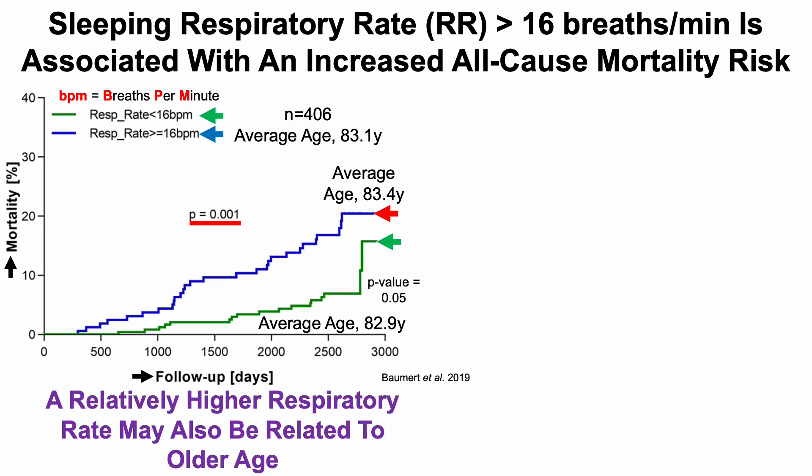Comparing the ages — 83.4 versus 82.9 — and looking at the p-value, the group that had a relatively higher respiratory rate greater than 16 breaths per minute was significantly older.